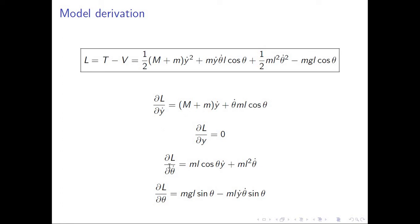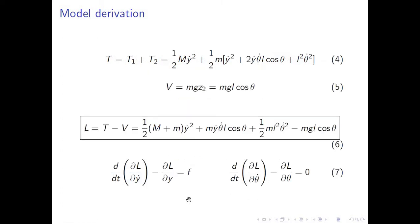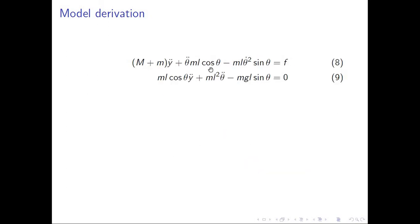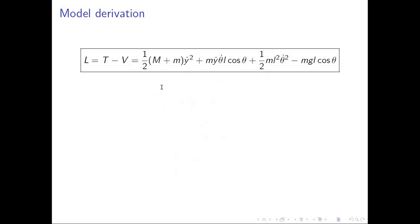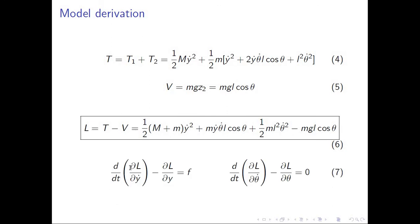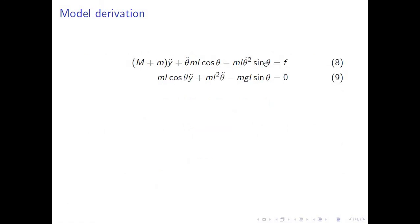Once we have all these terms, we can calculate the two Euler-Lagrange expressions and substitute them. What we get are two equations describing the dynamics of the system. Remember that the total derivative is with respect to time. These two equations form our nonlinear model, since they fully describe the system dynamics — you can apply an input force and observe the behavior.